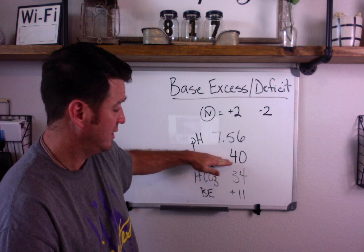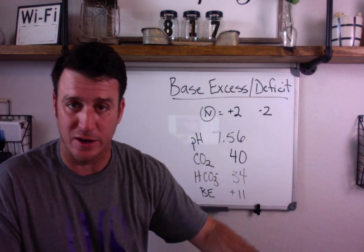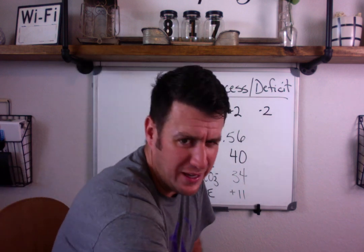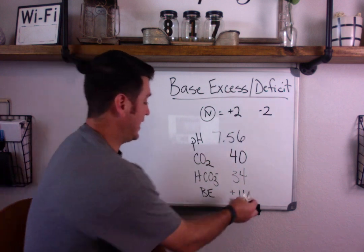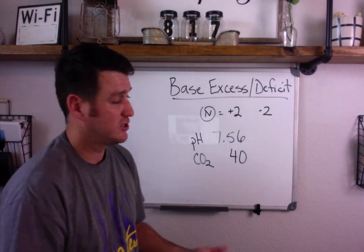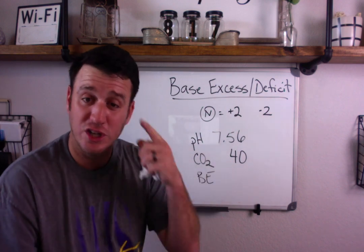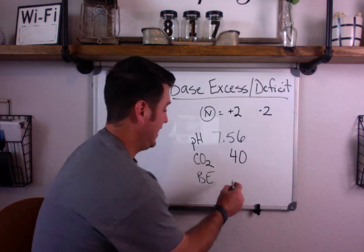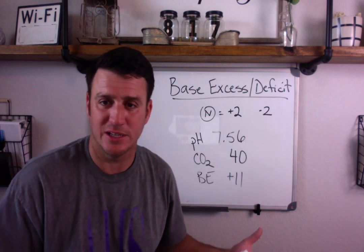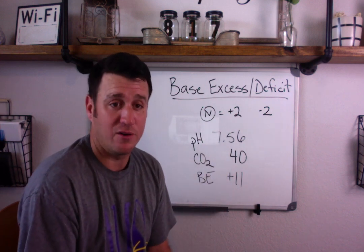With a normal CO2, the base excess is telling you we have a plus 11 excess of bicarb, which is an indication of our metabolic status. The way to really learn and understand base excess: if you're given a pH of 7.56 and a CO2 of 40 and you eliminate the bicarb, you should know right away that you must have a base excess — something is taking this pH to the alkalotic range. This is uncompensated metabolic alkalosis.